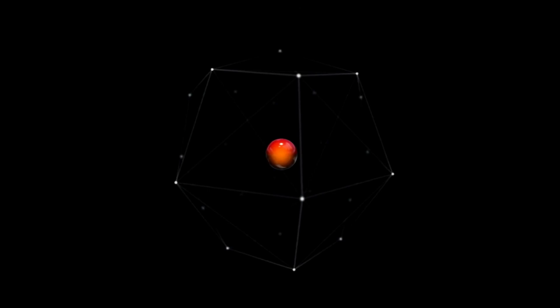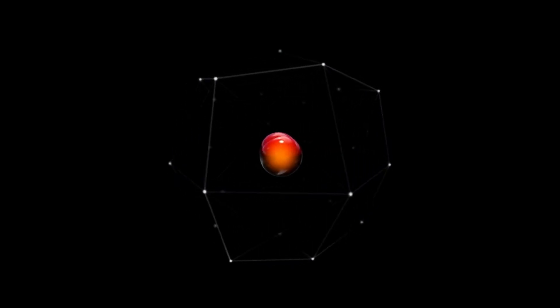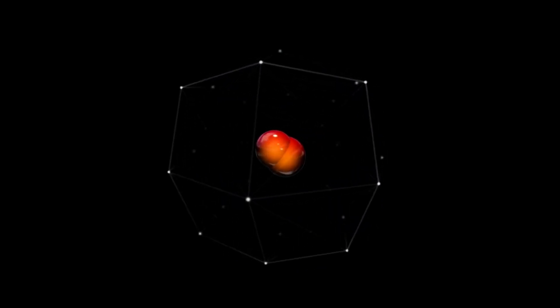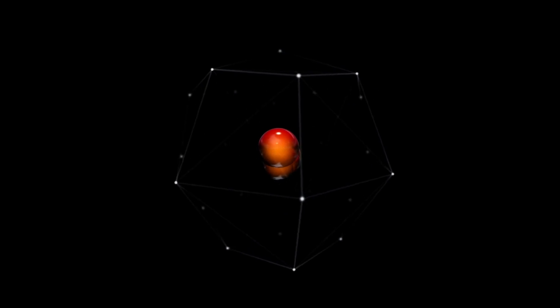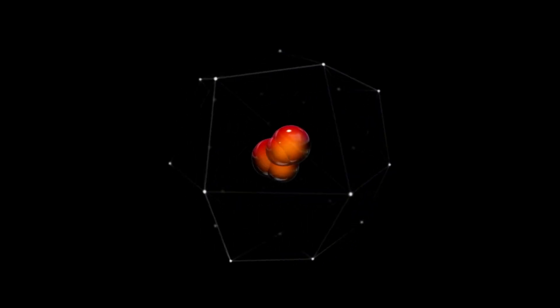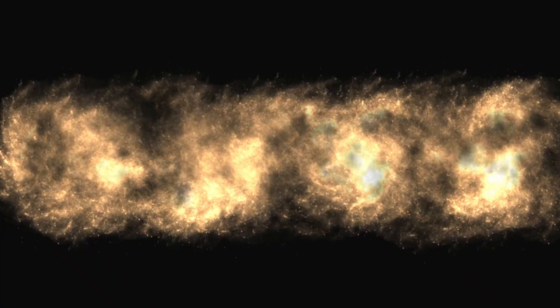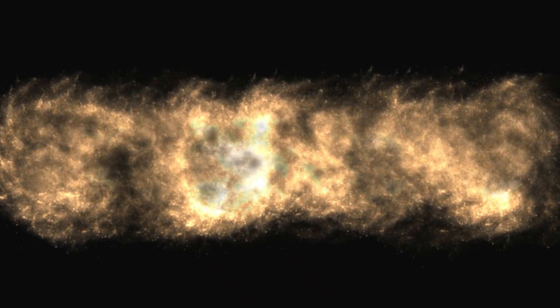As hydrogen fusion in the core slows down, the outer layers of the star expand, causing it to grow even larger in size. During this phase, helium accumulates around the core, which is now mostly hydrogen depleted, and a new fusion process begins.